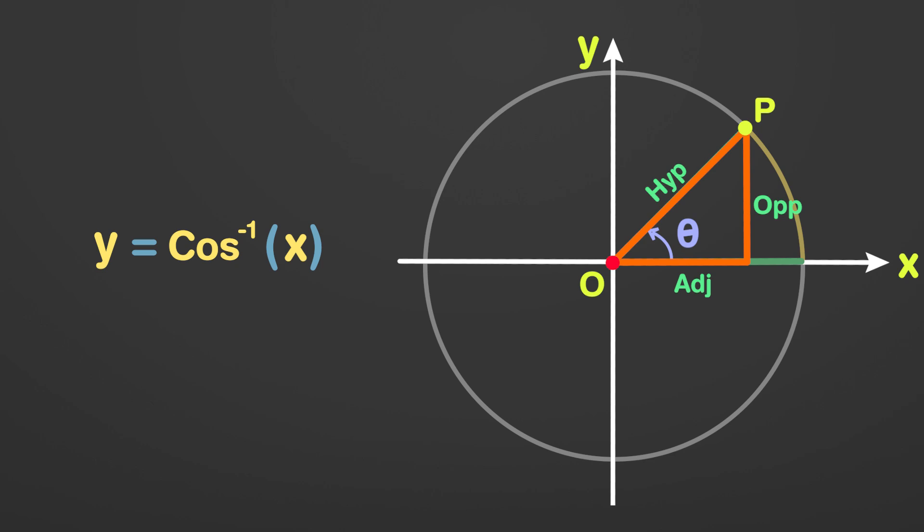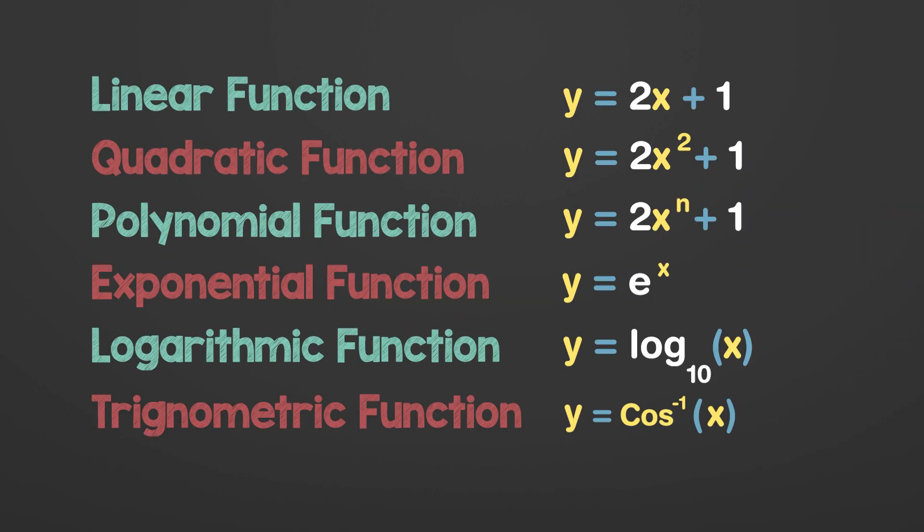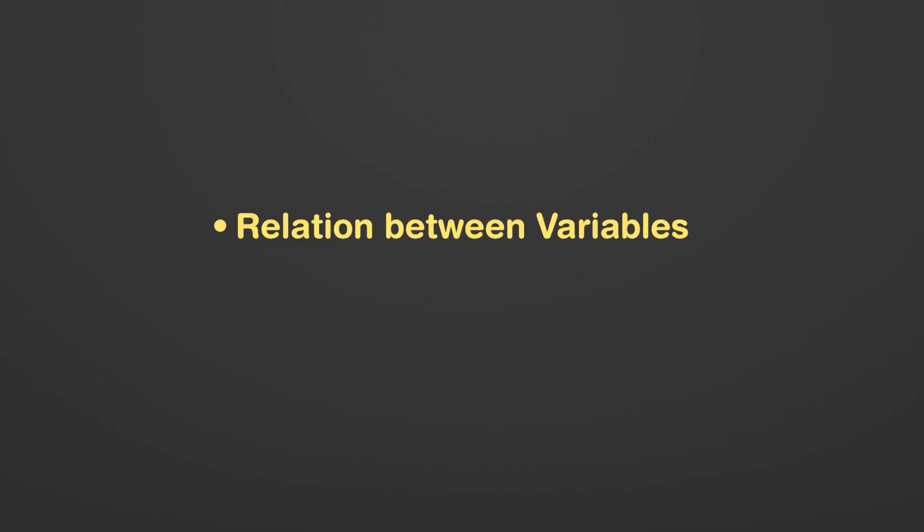This is somewhat similar to other functions, which represent the relationship between variables x and y. In all these functions, we see that there is a y term and there is an x term. Moreover, there is an equal sign between the left-hand side quantity and the right-hand side quantity. It's kind of intuitive to say that a function is a relation between more than one variable, having an equal sign separating the left-hand and right-hand sides of the equation.